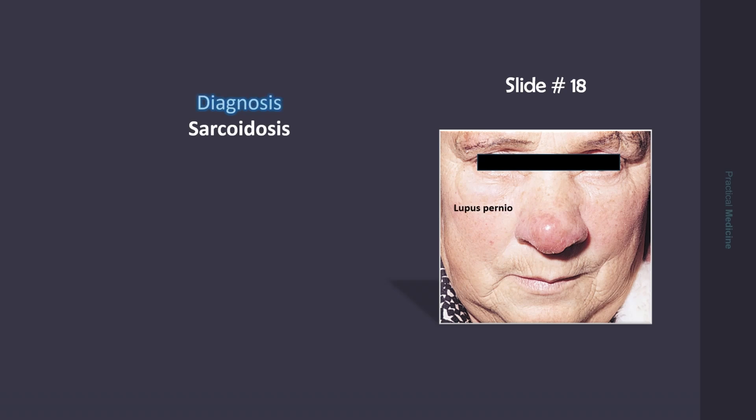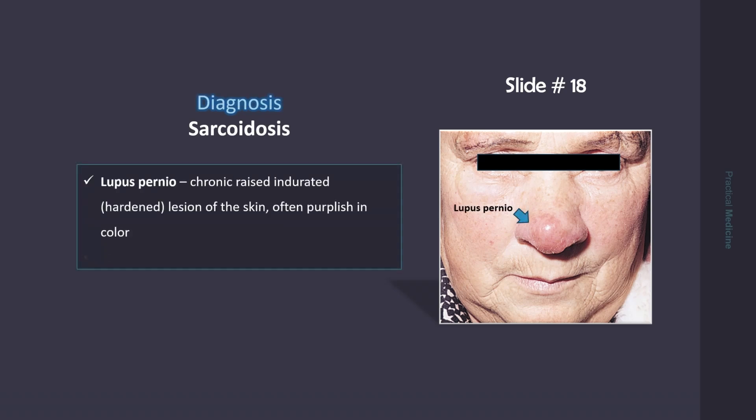The lesion shown here is lupus pernio. This is seen in sarcoidosis patients. Lupus pernio is a chronic, raised, indurated, hardened lesion of the skin, often purplish in color. It is seen on the nose, ears, cheeks, lips, and forehead.